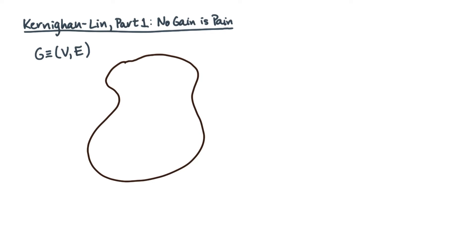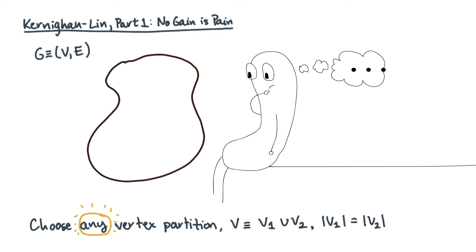The idea behind the KL algorithm is simple. Given a graph, divide the vertices into two subsets of equal or nearly equal size. Yes, any split will do. I'm serious, anyone you want. It's okay, go ahead. Oh, for goodness sake, just pick a partition already.